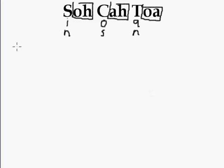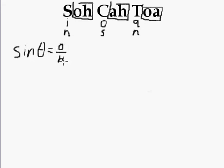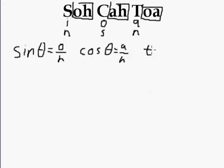We use those in these three equations. The first equation is that SIN of theta — theta is the angle — is equal to O over H. The COS of theta, or the COS of the angle, is equal to A over H. And then lastly, the TAN of theta is equal to O over A.